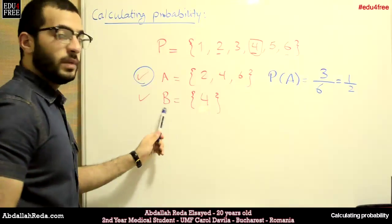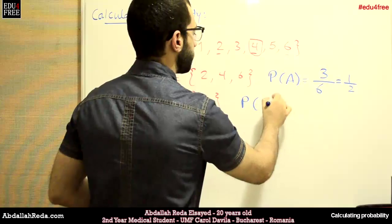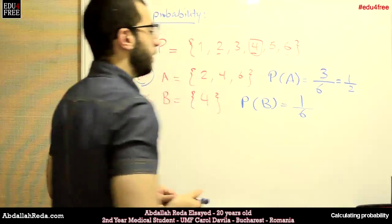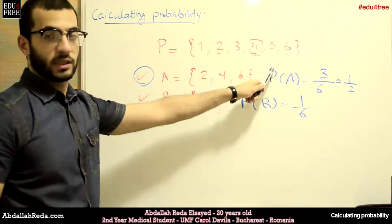For this event B, the probability will be 1 over 6, because it represents just 1 probability out of the 6 probabilities.